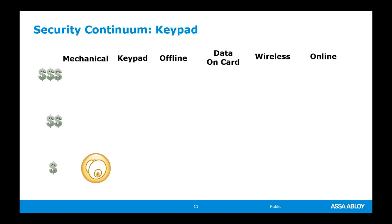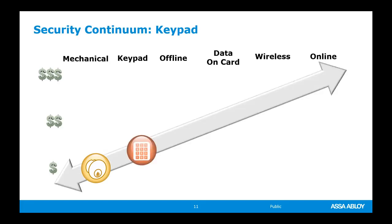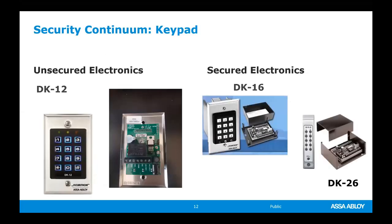Moving up the security continuum, the next step is the keypad lock. The standalone keypad lock has gained popularity and come down in price. It gives you traffic control — you can add or delete individuals by touching a few codes. It provides convenience and a form of security. There are two different types: unsecured electronics and secured electronics.